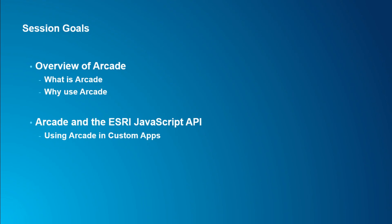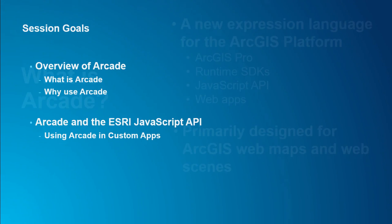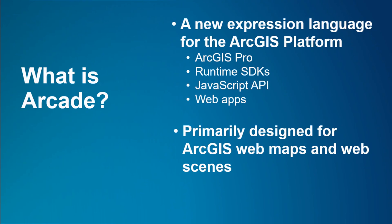When we start talking about Arcade, we're usually asked a number of questions. The first is: what is it? It's a simple expression language that can be used across all of the apps and APIs in the ArcGIS platform — in Pro, the runtime SDKs, the web apps, and the JavaScript API. It's an expression language meant to encode some of the logic of the map, as part of the web map or web scene specification, so you can extend your map with extra logic.